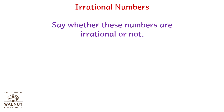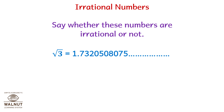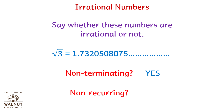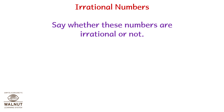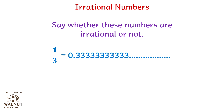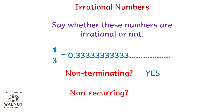Say whether these numbers are irrational or not. Root 3: 1.7320508075... Non-terminating? Yes. Non-recurring? Yes. So it is irrational. The next number — non-terminating? No. Non-recurring? No. So it is not an irrational number.